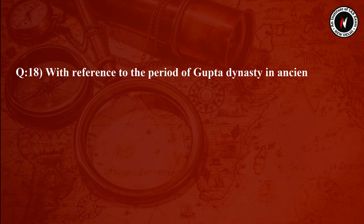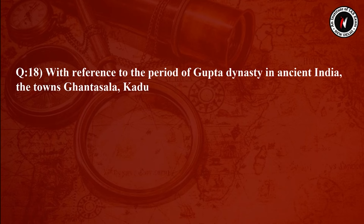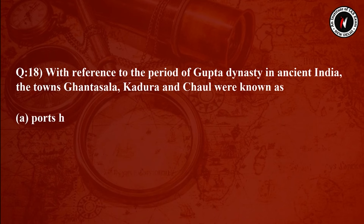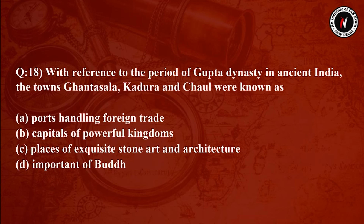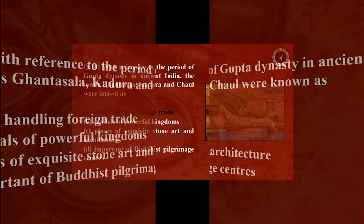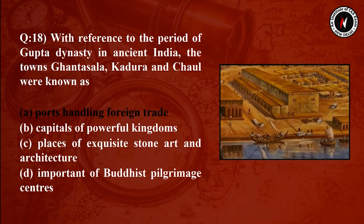Question number 18: With reference to the period of the Gupta dynasty in ancient India, the towns Ghantashala, Kadura, and Chaul were known as — Option A: ports handling foreign trade. Option B: capitals of powerful kingdoms. Option C: places of exquisite stone art and architecture. Option D: important Buddhist pilgrimage centers.